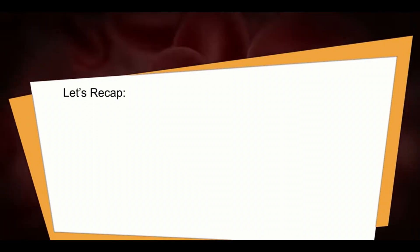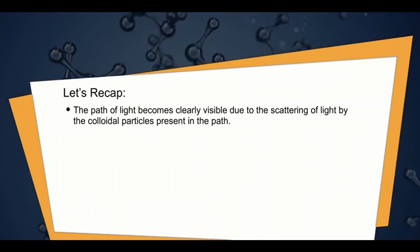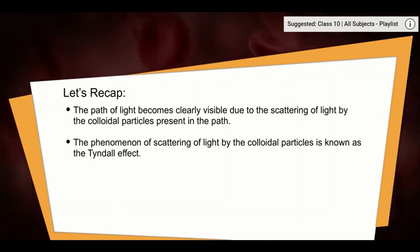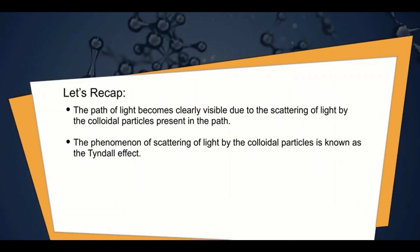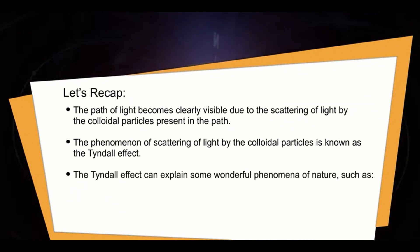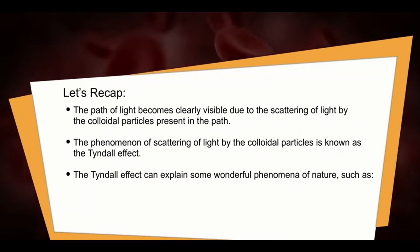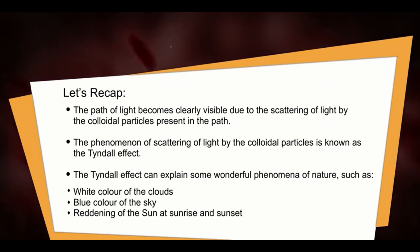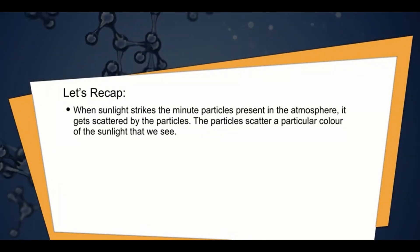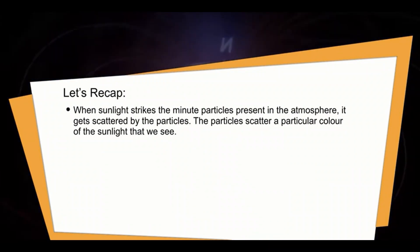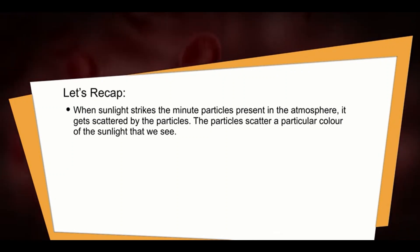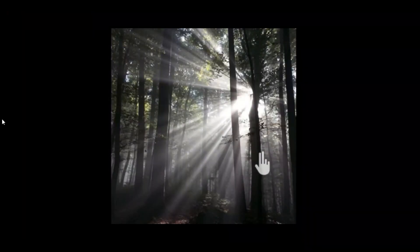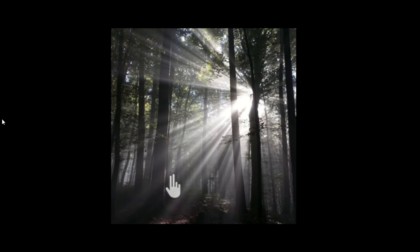Quick recap: The path of light becomes clearly visible due to scattering of light by colloidal particles present in the path. The phenomenon of scattering of light by colloidal particles is known as the Tyndall effect. The Tyndall effect can explain wonderful phenomena such as the white color of clouds, the blue color of the sky, and the reddening of the sun at sunrise and sunset. When sunlight strikes minute particles present in the atmosphere, it gets scattered and the particles scatter a particular color of sunlight that we see.